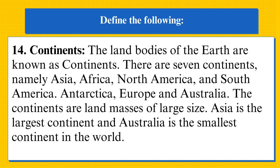Continents: the land bodies of the earth are known as continents. There are seven continents, namely Asia, Africa, North America, South America, Antarctica, Europe, and Australia. The continents are land masses of large size. Asia is the largest continent and Australia is the smallest continent in the world.